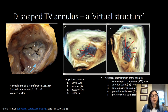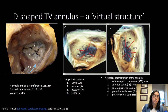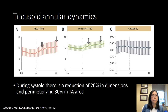There are two ways that the tricuspid annulus has been broken down for identification purposes. The first is the surgical perspective, which breaks it down into aortic, anterior, posterior, and septal areas. The other is the Agricola segmentation, which breaks it down into an anterior-septal commissure area, an anterior leaflet area, an anterior-posterior commissure area, a posterior leaflet area, as well as a posterior-septal commissure area. The tricuspid valve annulus is very dynamic and changes throughout the cardiac cycle — the area, perimeter, and circularity all change greatly. You can get a reduction of almost 20% in dimensions and perimeter, as well as a 30% reduction in tricuspid annular area during systole.